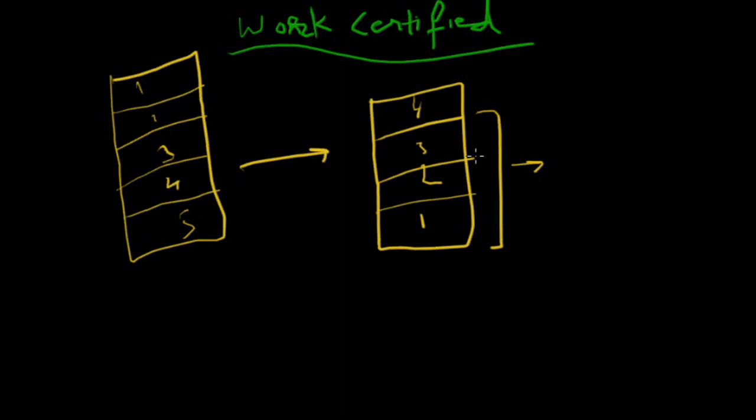Suppose the contract money is $25,000. With the three parts certified, the architect or engineer certified that 80% of the total work is completed.